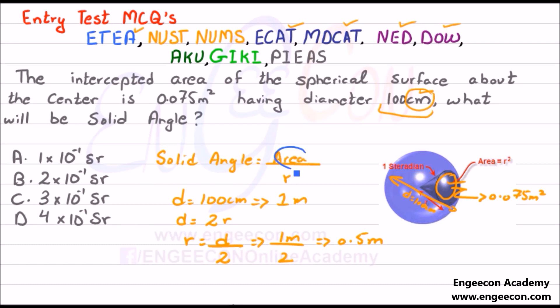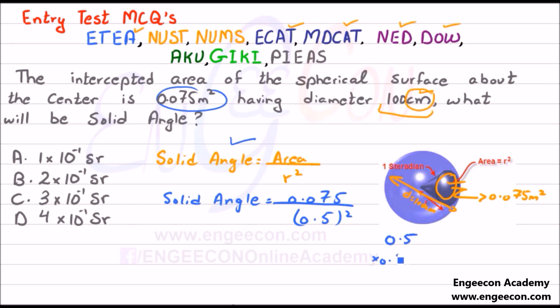Now we can put the value of this area and radius in this formula. Solid angle is equal to 0.075 divided by 0.5 whole square. Whole square of 0.5 is equal to 0.25.